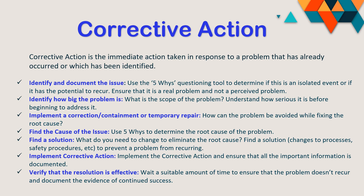Once we understand the root cause, we find a solution. We change the process to eliminate the root cause — implementing changes in process, safety procedures, or whatever quality issue requires — and prevent the problem from occurring in the future. Then we implement the corrective action, ensuring all important information is well documented. We verify whether the resolution is effective, whether the same problem is not affected by the same root cause, and whether the solutions applied are effective. We allow a suitable amount of time to confirm the problem does not recur, evidenced by documentation of continued success.